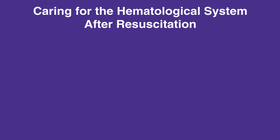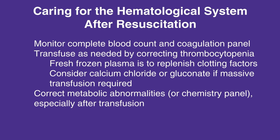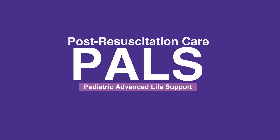When caring for the hematological system after resuscitation, follow this checklist: monitor complete blood count and coagulation panel; transfuse as needed by correcting thrombocytopenia; fresh frozen plasma is used to replenish clotting factors; consider calcium chloride or gluconate if massive transfusion is required; correct metabolic abnormalities via chemistry panel, especially after transfusion. This concludes our lesson on post-resuscitation care.